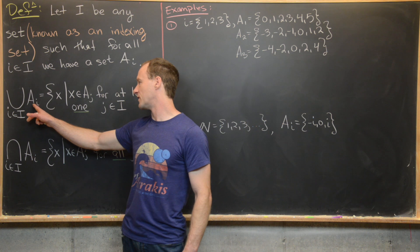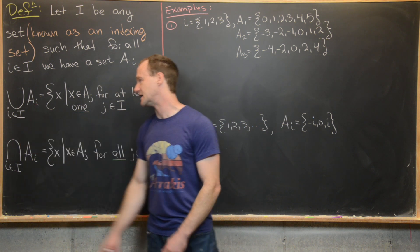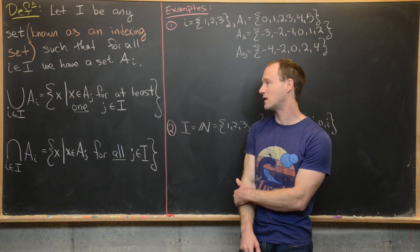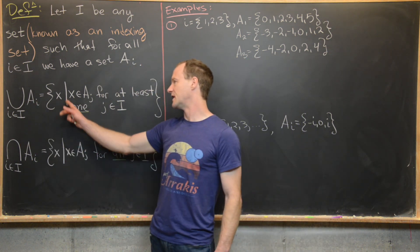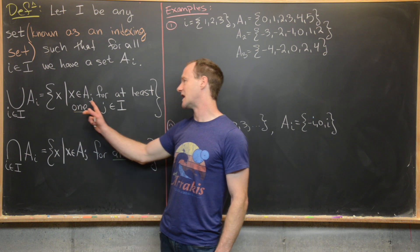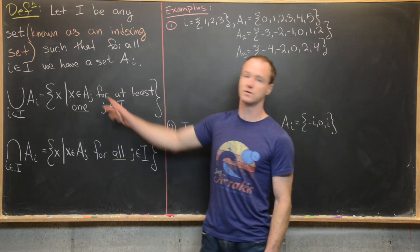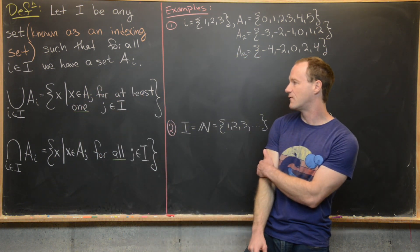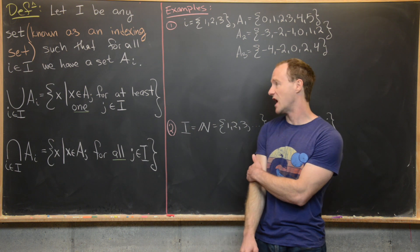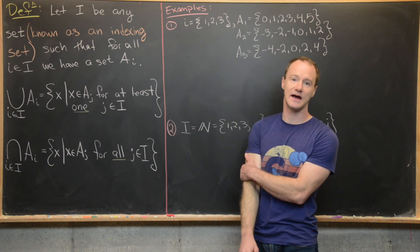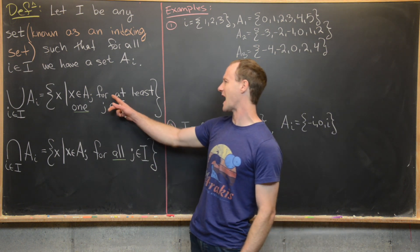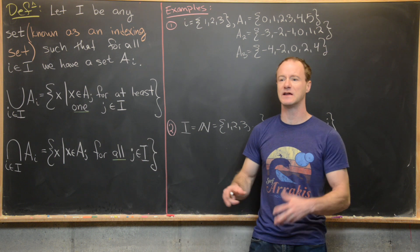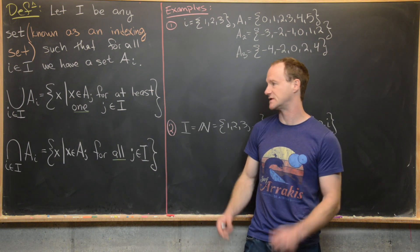So the union over the A_i as i runs over the whole indexing set capital I is everything x that satisfies this rule: x is in A_j for at least one j in I. You can think of this 'at least one' statement as being like an OR statement.